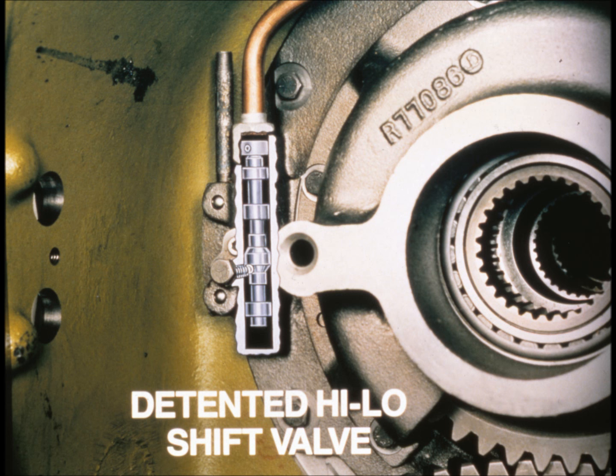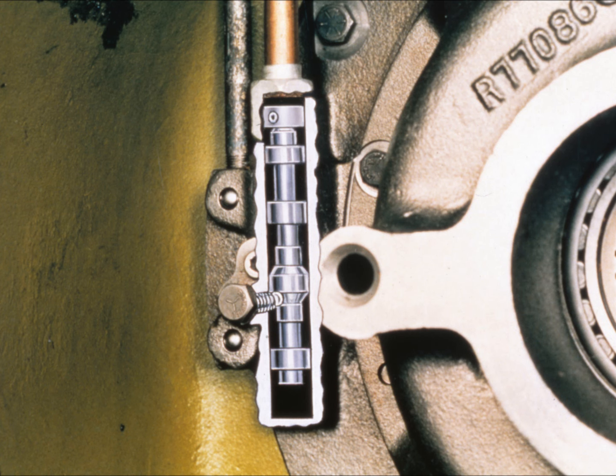The detented high-low shift valve directs engagement oil to either the C-low clutch or the B-high brake in the input planetary. This valve is controlled by the C-low/B-high shift valve in the shift valve housing. If you look closely, you can see the spring, ball, and detent — these parts lock the detented high-low shift valve in one position until it's pushed into the other. By being in one position or another, the detented high-low shift valve prevents a neutral condition in the input planetary, ensuring that either the C-low clutch or the B-high brake will always be engaged.